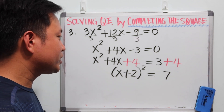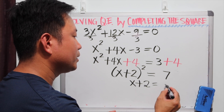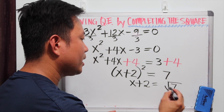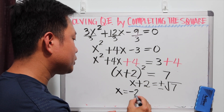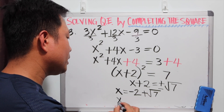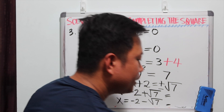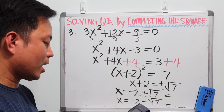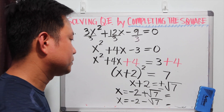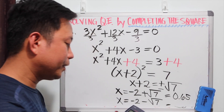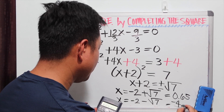The next step is to take the square root of both sides, which gives us x plus 2 is equal to root 7. We need to have plus or minus, so our first value — subtracting 2 from both sides — is negative 2 plus root 7, and the other is negative 2 minus root 7. Plugging into your calculator, negative 2 plus root 7 gives 0.65, and negative 2 minus root 7 gives negative 4.65.